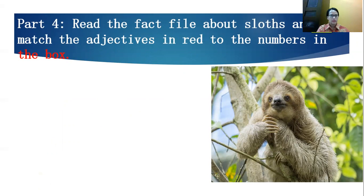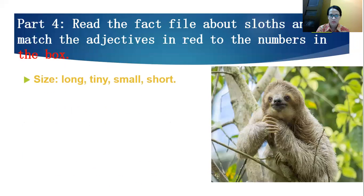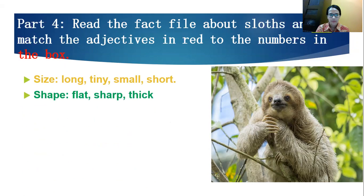Now talking about sloths. Here in your learner's book on page 117, the fact file is in your learner's book. Now we will match the adjective in red to the number of the box. So if you find long, tiny, small, short, they are talking about or they are referring to size. Flat, sharp, thick, referring to shape. Gray, brown, black, and so on. Of course, they are colors. Furry is material.